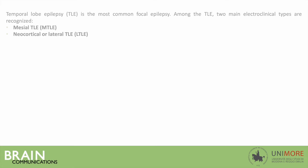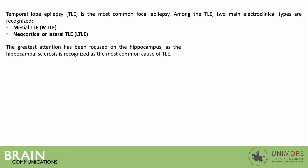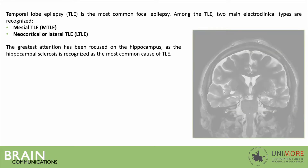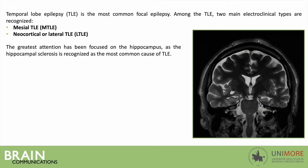Temporal lobe epilepsy is the most common focal epilepsy. Among TLE, two main electroclinical types are recognized: mesial temporal lobe epilepsy and neocortical temporal lobe epilepsy. The greatest attention has been focused on the hippocampus, as hippocampus sclerosis is recognized as the most common cause of TLE.